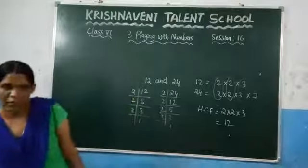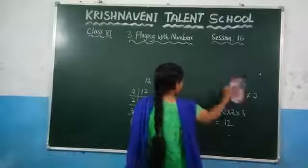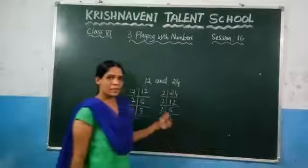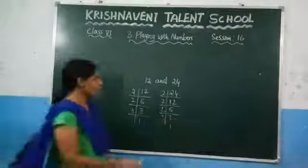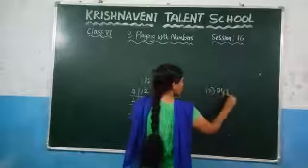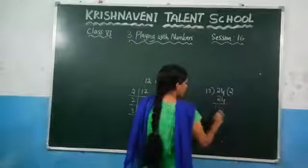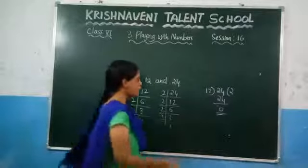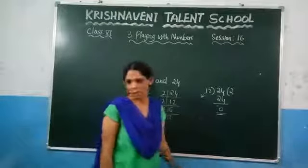We also discussed the continued division method. In the continued division method, you need to divide the greatest number by the smallest number. So divide 24 by 12. Since you are getting the remainder as 0, the last divisor is 12. So you can say that the HCF is 12.